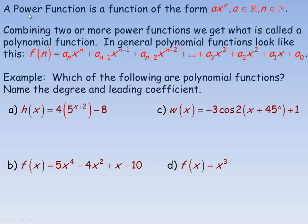On the second page, this is the definition of a power function. It's a function of the form ax to the power of n, where a is some real number, and the exponent would be a natural number — so you don't get a fractional exponent or a rational number in the exponent. It would only be a whole number exponent and not even a negative. For example, 3x squared. Combining two or more power functions, we get what's called a polynomial function.